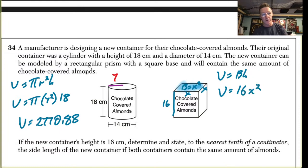But I know the volume is this, so I'm going to set this equal to 2770.88 whatever. So that's what I would do. I would say 16 x squared equals 2770.88 something. Divide by 16.